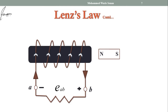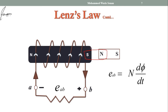Due to this direction of current, applying Maxwell's right-hand thumb rule, you will notice a south pole at the right end and a north pole at the left end. Again, a south pole is developed near the north pole of the incoming magnet. So this polarity of E_AB is not in accordance with Lenz's law — the polarity has to be reversed, meaning terminal B should be negative and terminal A positive. Therefore E_AB again has a negative sign: E_AB = -N dφ/dt.